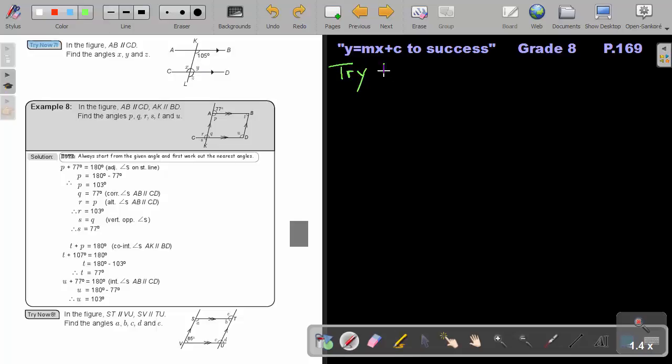Okay. Let's do Try Now 7. Now if I look, I always start at the angle given. What angle is given? This 105. So if I look here, can you see my Z? Do you see? So I can say that angle X will be equal to 105. And what will be my reason? I will say alternate angles. And why? Because AB is parallel to CD. Remember, it's not necessary to write the reason in the Namibian syllabus for the examination. But it's good practice to do that.